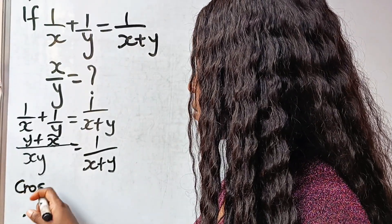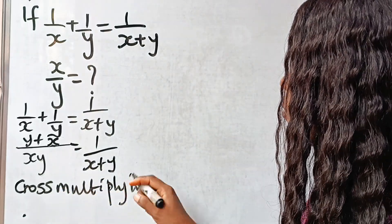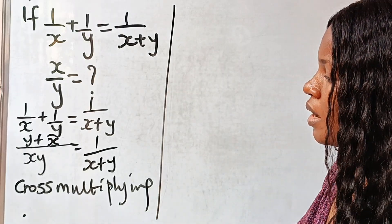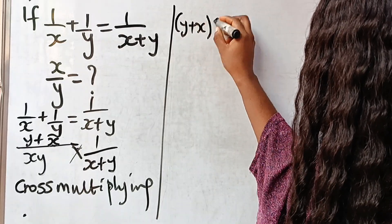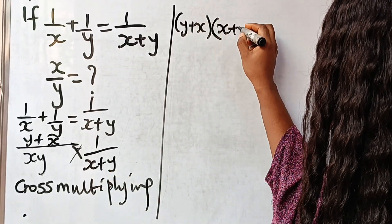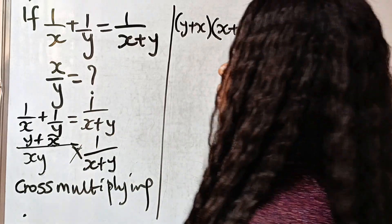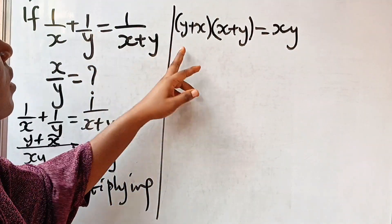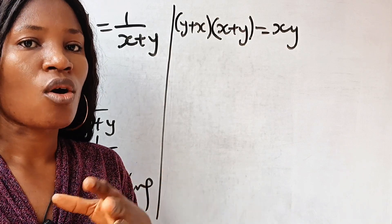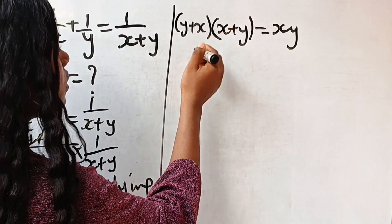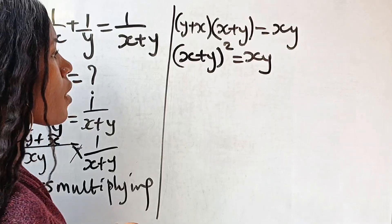Now let us cross-multiply. So if we cross-multiply, we have y plus x multiplied by x plus y is equal to xy times 1. Then we notice that y plus x is the same thing as x plus y — that is the commutative property of addition. So that means we can call this x plus y squared is equal to xy.